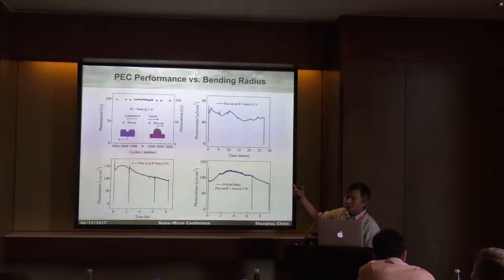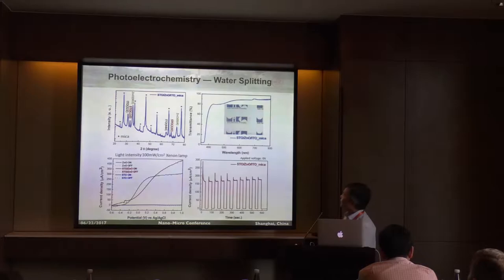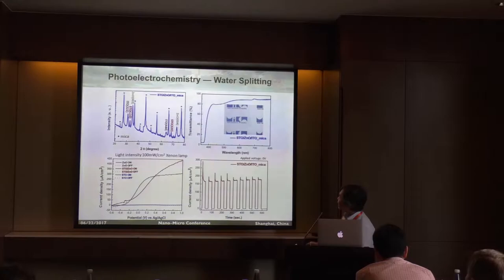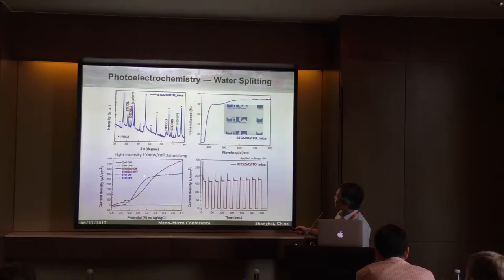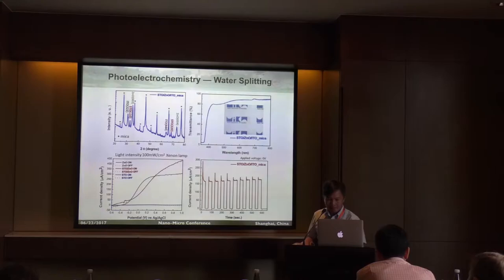What I demonstrated here is almost a fully transparent flexible PEC cell. Because iron oxide is a visible-light absorbing material, the next generation we are now working on is whether we can replace the iron oxide with different materials. Currently, we are using strontium titanate. You can see the same results on strontium titanate — the transmittance can be pushed up to 80%, and again everything is still epitaxial. The PEC performance is also good, and everything is transparent and flexible.